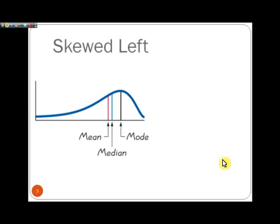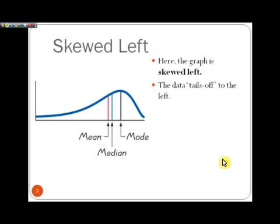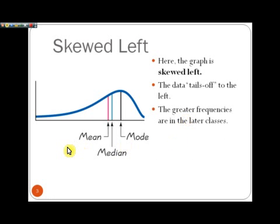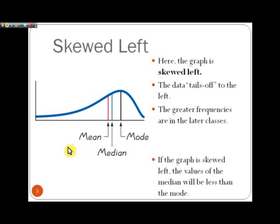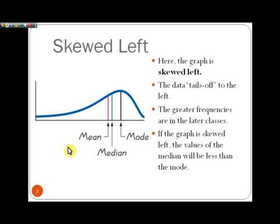This graph is skewed to the left because it tails off to the left side. When that happens, the greater class frequencies occur in the latter classes — the classes at the bottom of our frequency distribution. If a graph is skewed to the left, we always know that the value of the median will be less than that of the mode. The median will always be to the left of the mode.